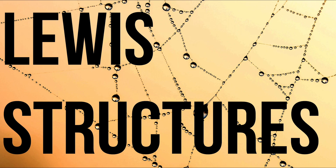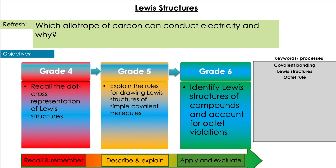Hey guys, welcome back to Bob Mupchem. In this video we're going to be carrying on looking at covalent compounds and specifically Lewis structures — what they are and how we can work out the structures of novel compounds using a simple set of rules. But as usual, a question to get us started: which allotrope of carbon can conduct electricity and why? Pause the video and have a go.